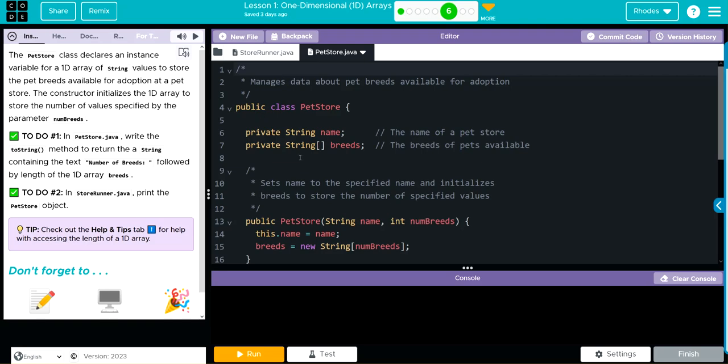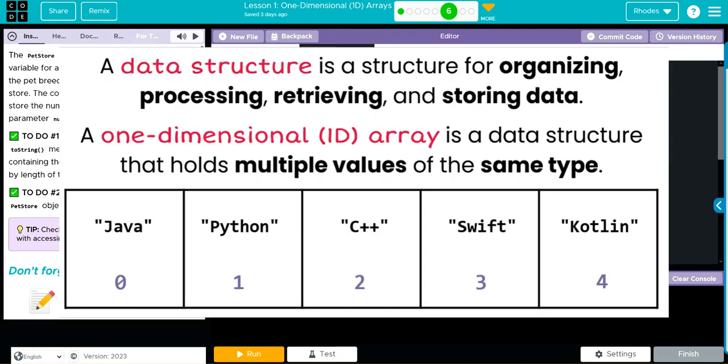In pet store, we have two instance variables: string name and string breeds with square brackets, which means this is our 1D array. A 1D array is just a way we can use a variable to store multiple pieces of the same type of information: a bunch of strings, ints, doubles, or booleans, much like a row in a table.